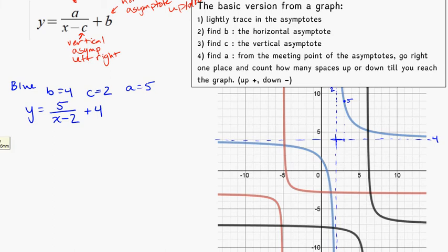Take a look at the red one next. Same process, let's trace in lightly our asymptotes. It looks like that's going to be the asymptote along there for the horizontal, and that is at negative 3. And here, for your vertical, that's at negative 5, so negative 5 for the vertical.